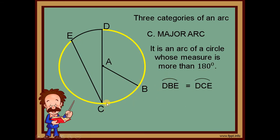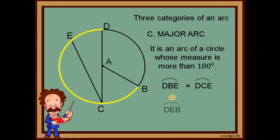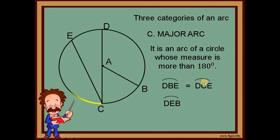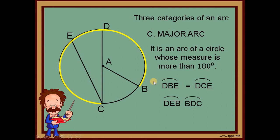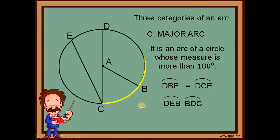Another major arc example: we can name it arc DEB — from D, through E, to B. Another is arc BDC — from B going to D up to C. This is a major arc because it goes beyond the halfway point. And the last one, arc CBE — from C, through B, all the way up to E.